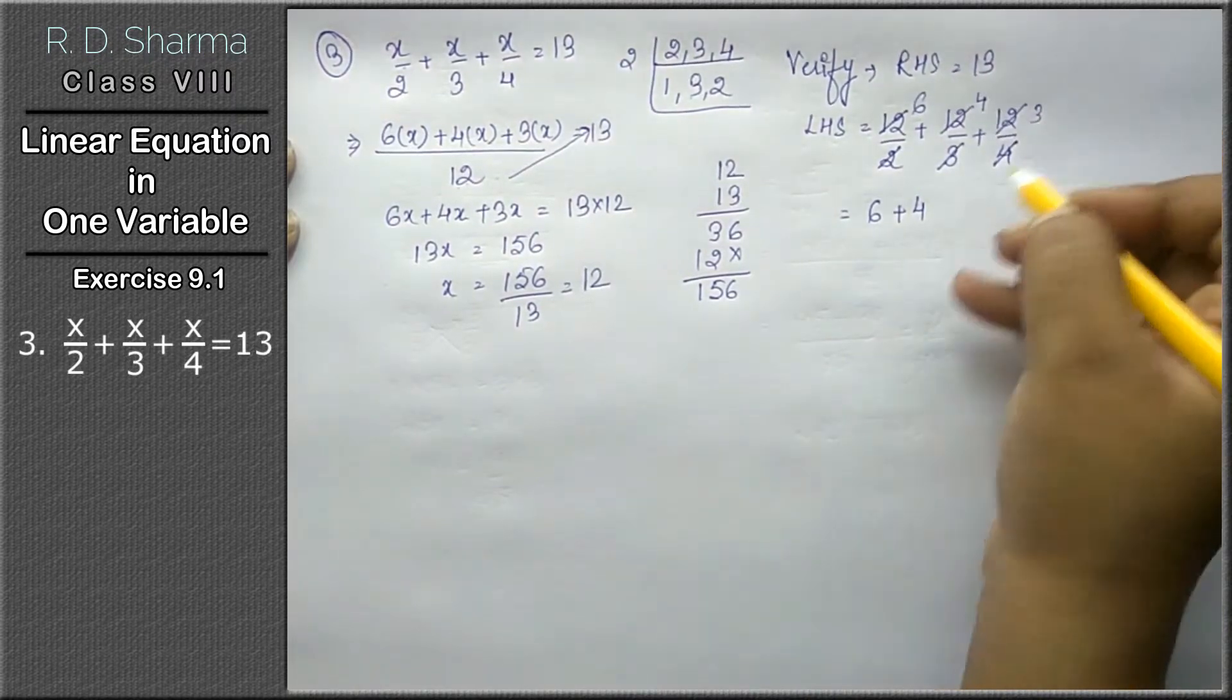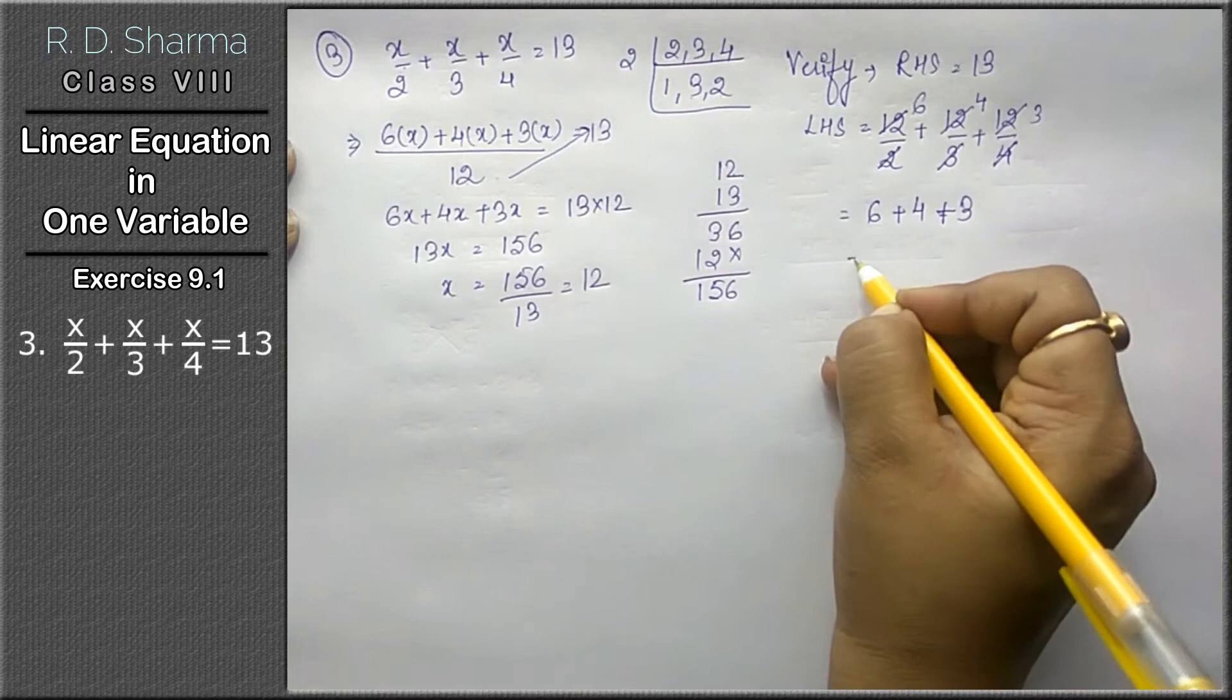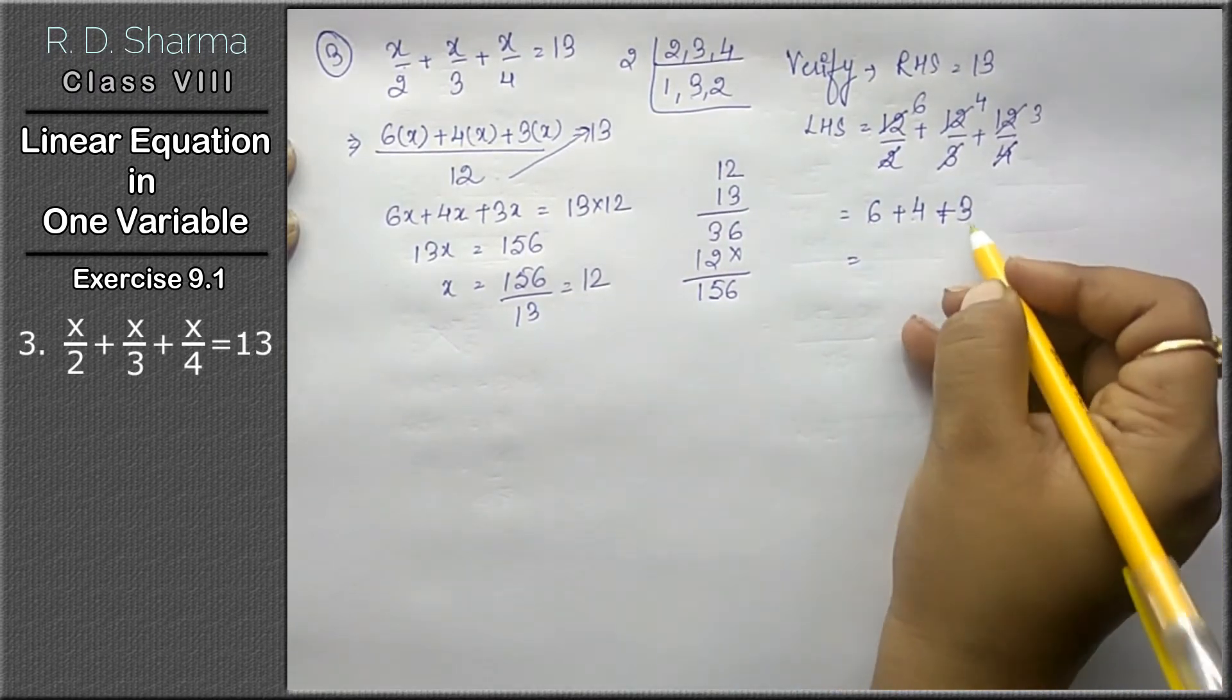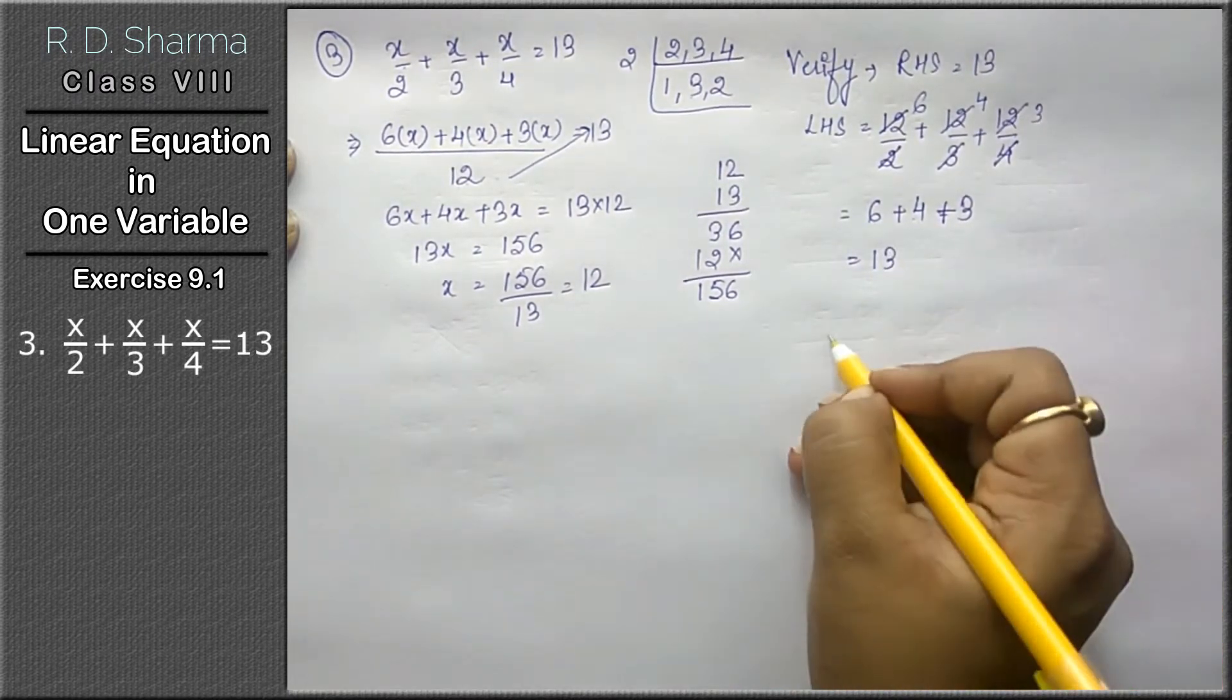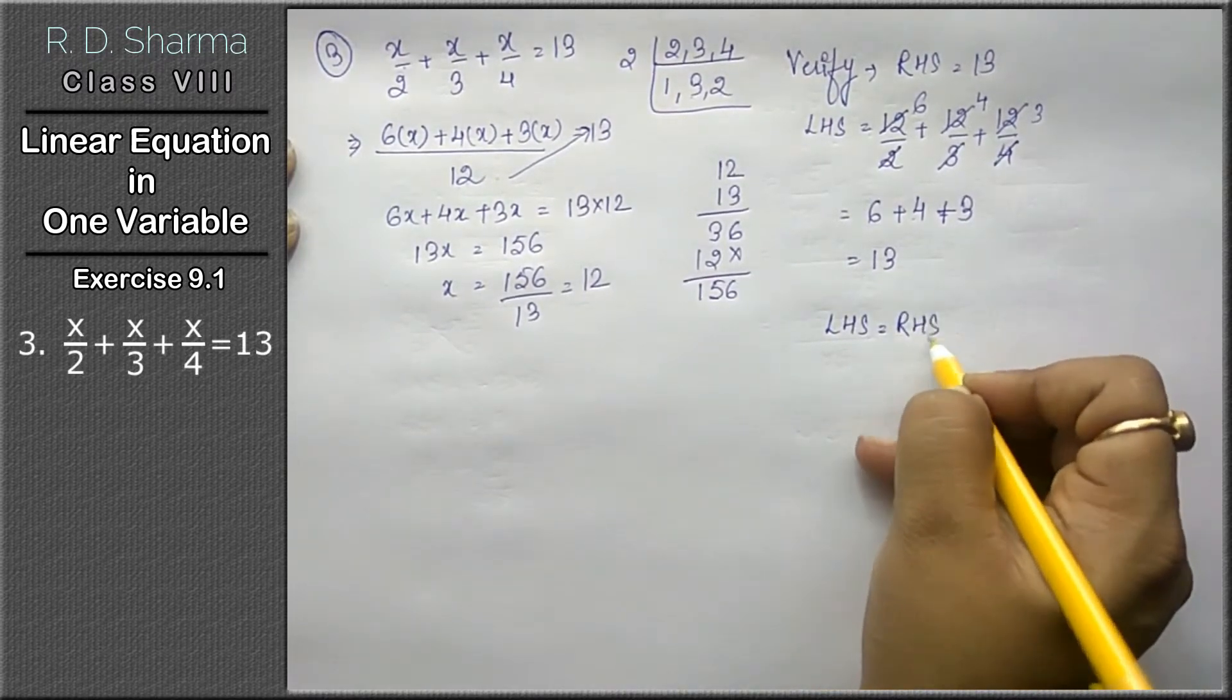4 into 3 is 12, so 12 upon 4 is 3. Plus 3. 6 plus 4 is 10, 10 plus 3 is 13. That means left hand side is equal to right hand side.